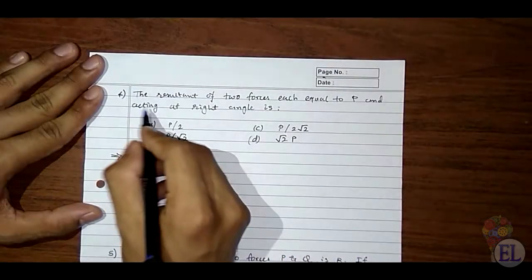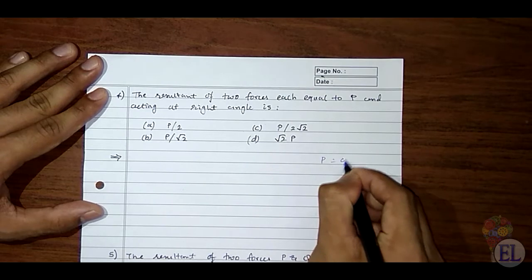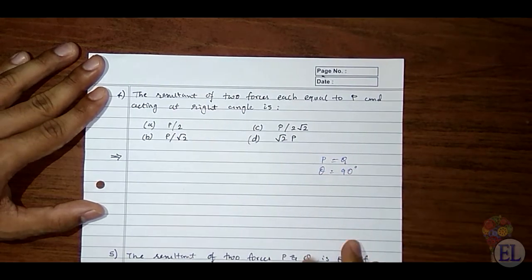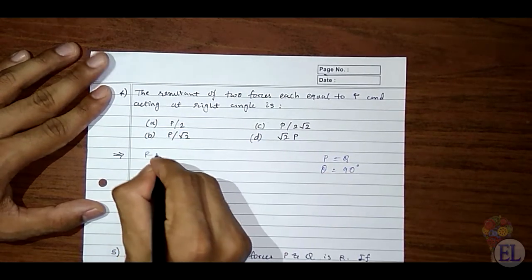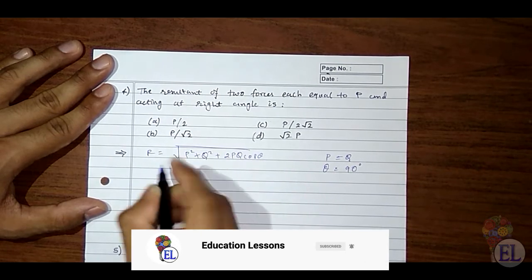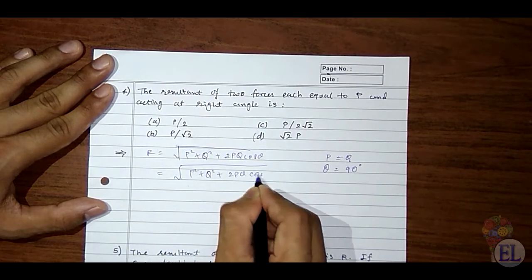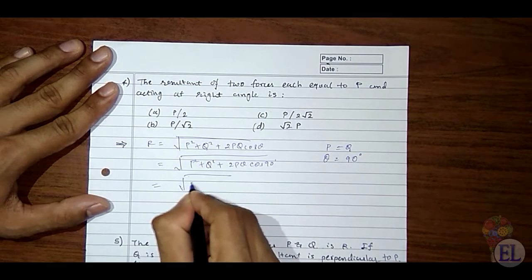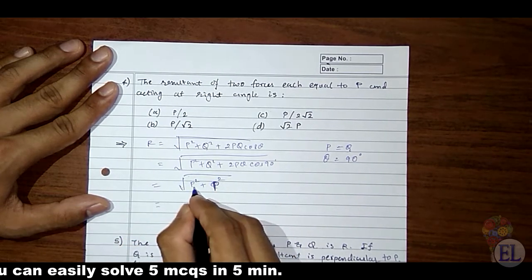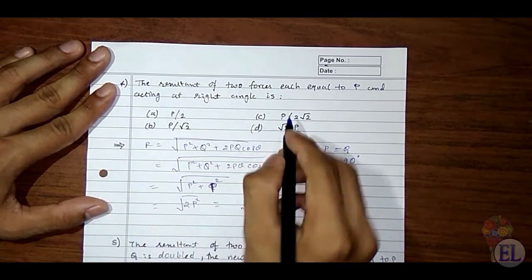The next question is: the resultant of two forces each equal to P and acting at right angles is? Here P = Q and θ = 90°. So R = √(P² + Q² + 2PQ·cos90°) = √(P² + P² + 0) = √(2P²) = P√2. The answer is option D.